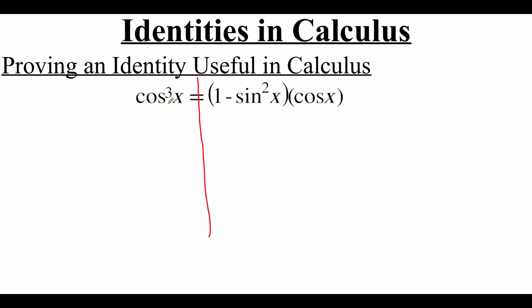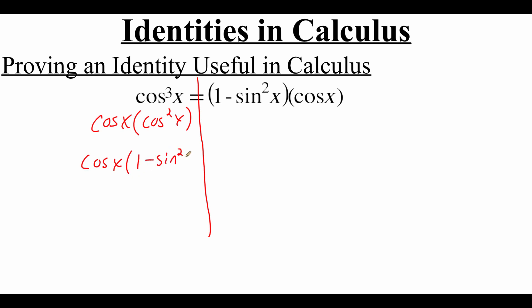So we're going to take something that's simpler and turn it into something more complicated. Starting with cosine cubed of x, I see that we're separating a cosine out of there. Taking a cosine out leaves me with cosine squared of x. Now cosine squared — we can use a Pythagorean identity and replace that with 1 minus sine squared of x. Multiplication is commutative, so the order does not matter, and these are in fact saying the same thing. So we have proven this identity.